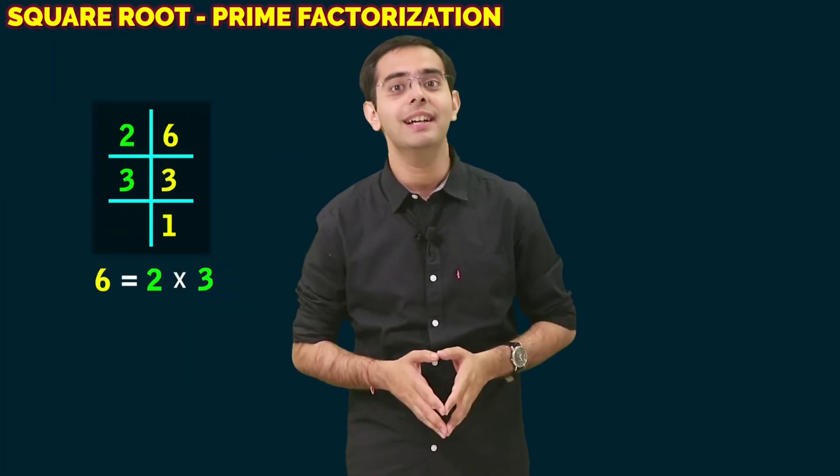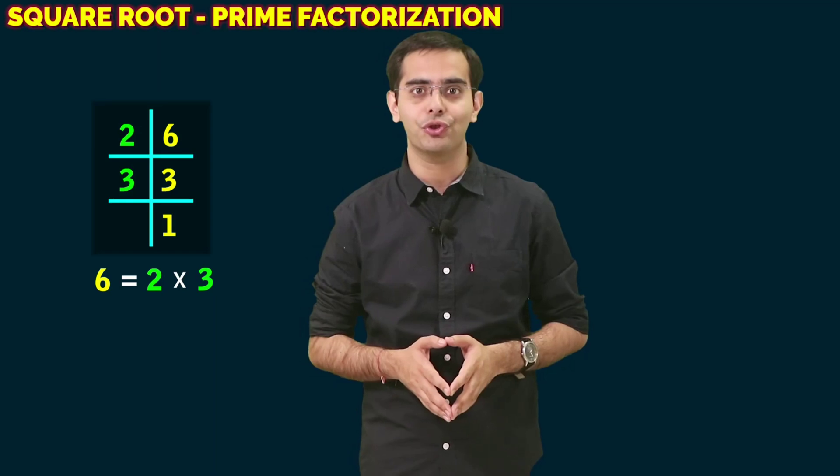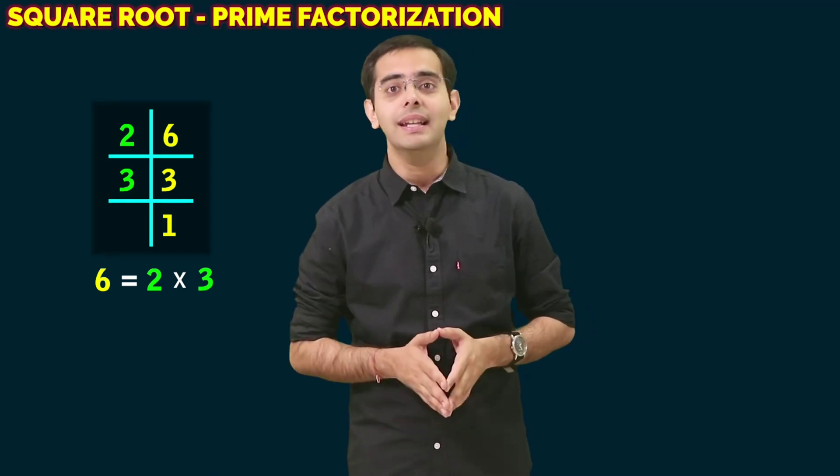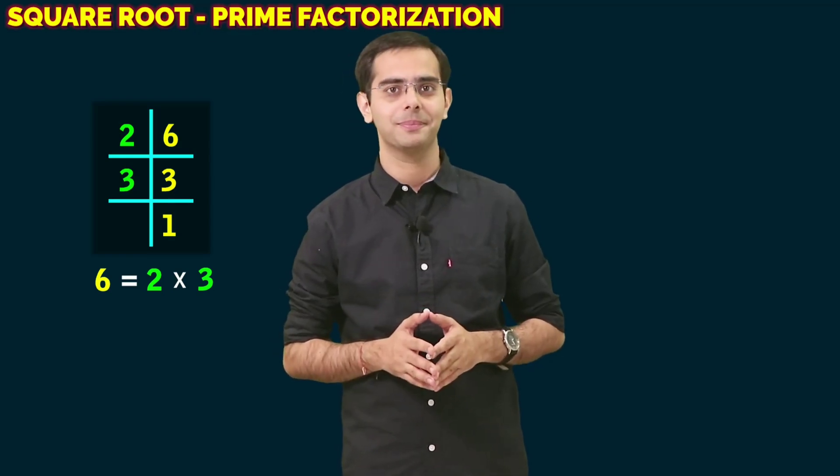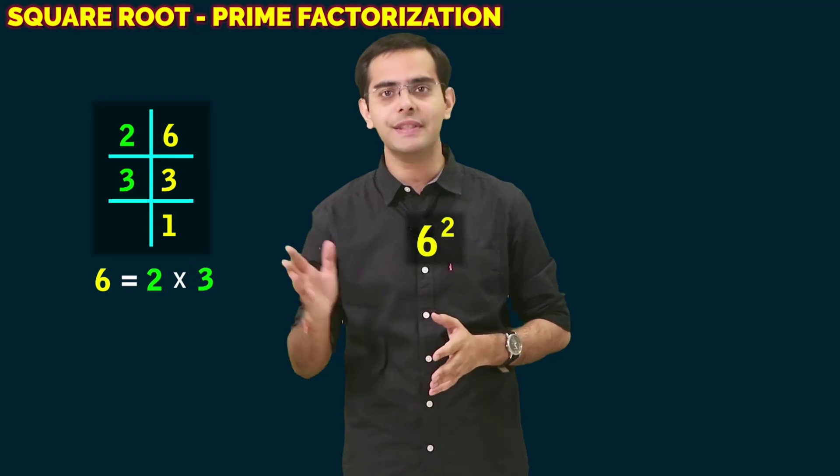Let's now discuss how to find the square root through prime factorization. For that, let's first compare the prime factorization of 6 and its square. What is the square of 6?